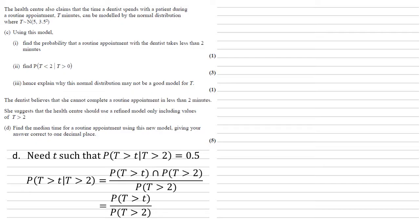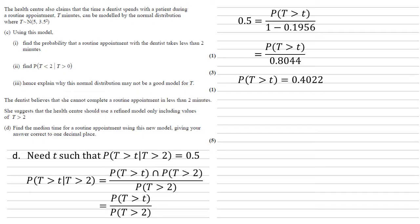Using the conditional probability formula, P(T > t | T > 2) equals P(T > t ∩ T > 2) over P(T > 2). Since our small t is greater than 2, the intersection simplifies to P(T > t). We know the conditional probability is 0.5 and we already calculated P(T > 2), so substituting in: 0.5 = P(T > t) divided by (1 − P(T < 2)), giving 0.8044 on the denominator. Multiplying both sides by 0.8044, P(T > t) = 0.4022.